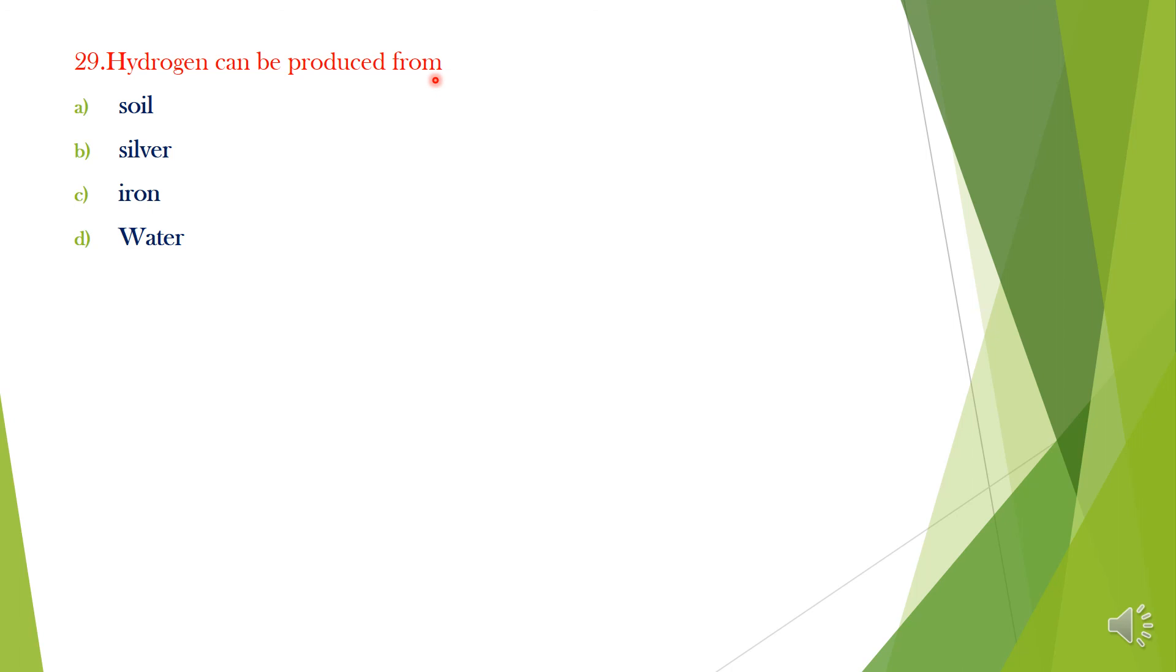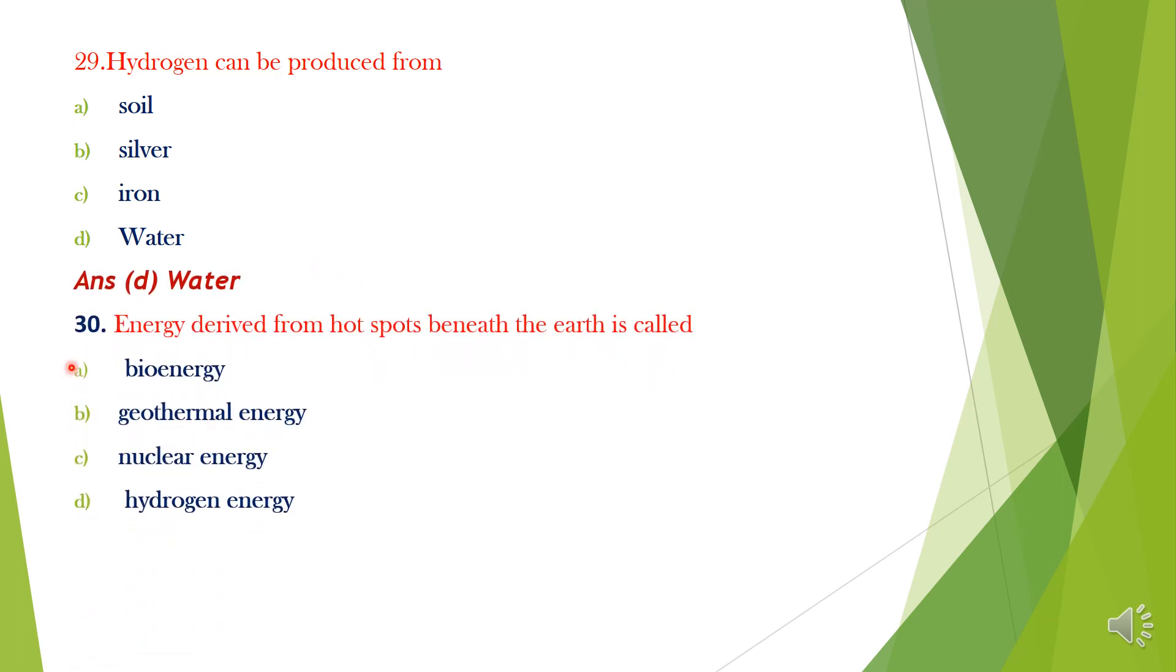Question 29. Hydrogen can be produced from: A. Soil, B. Silver, C. Iron, D. Water. Answer is option D, Water.